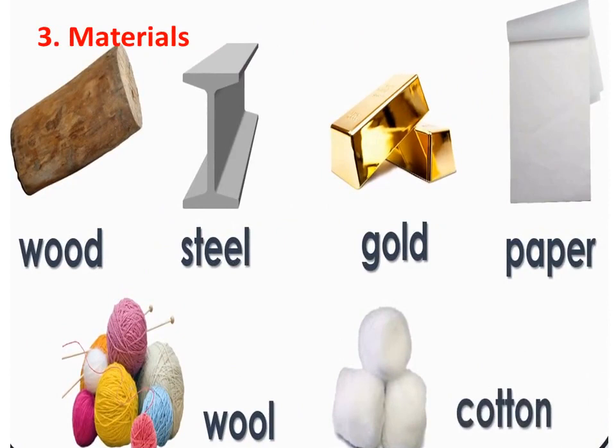Third one: materials. Wood comes under uncountable noun. Steel, gold — they come under uncountable noun. Paper: if there are papers, we can count them. But when paper is given as a material, it comes under uncountable noun — paper is an uncountable noun. Wool is an uncountable noun. Water comes under uncountable noun. These materials are uncountable nouns.